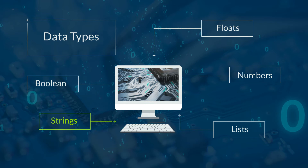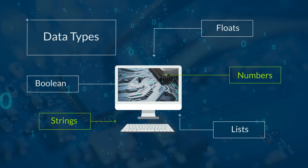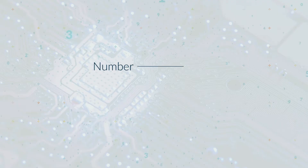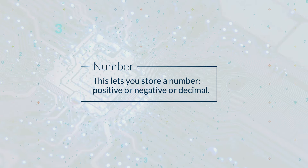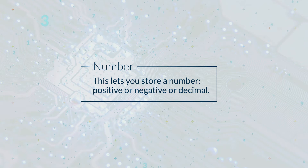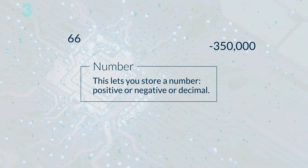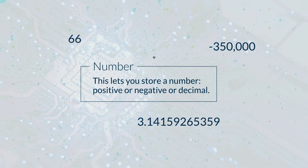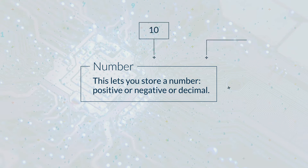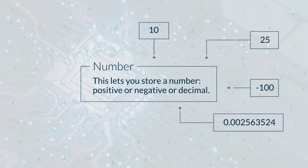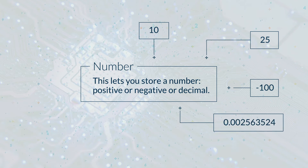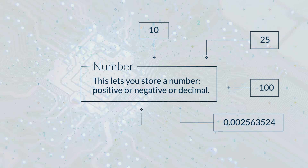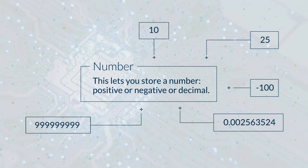Two common data types are string and number. The number data type lets you store a number. This can be any number — positive, negative, or decimal. For example, it can store 10, 25, minus 100, 0.002563524, or even 999999999.